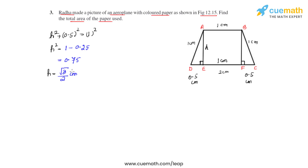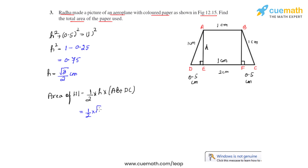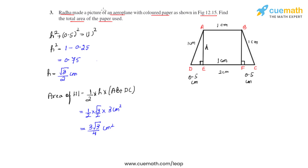Now that we have the height, we find the area of the trapezium using the formula: Area = (1/2) × height × (sum of parallel sides). Substituting: (1/2) × (√3/2) × (AB + DC) = (1/2) × (√3/2) × (1 + 2) = 3√3/4 centimeter square. Substituting √3 = 1.732, the area of region 3 equals approximately 1.3 centimeter square.